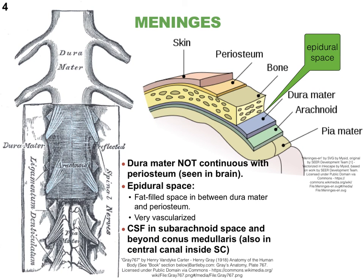Just as the brain is protected by meninges, we also have meninges around the spinal cord — basically an extension of those around the brain with very similar anatomy. We once again have a dura mater, an arachnoid mater, and a pia mater. The dura mater is the most superficial, with the pia mater directly touching the spinal cord. On the image, the outer layer is the dura mater; reflecting it reveals the arachnoid mater, and then the pia mater touches the spinal cord tissue directly. There are also special structures that keep the spinal cord anchored to the vertebral column.